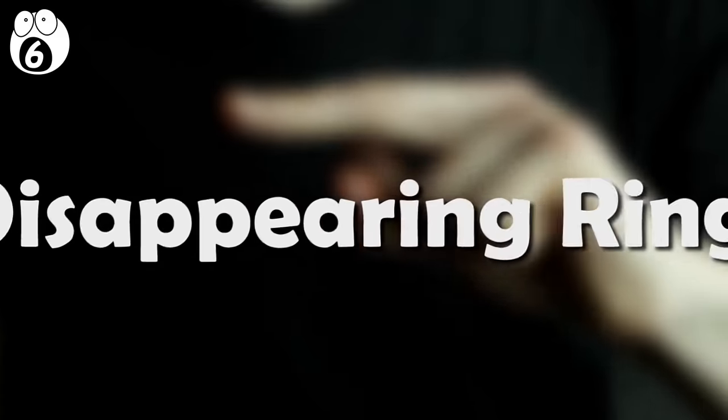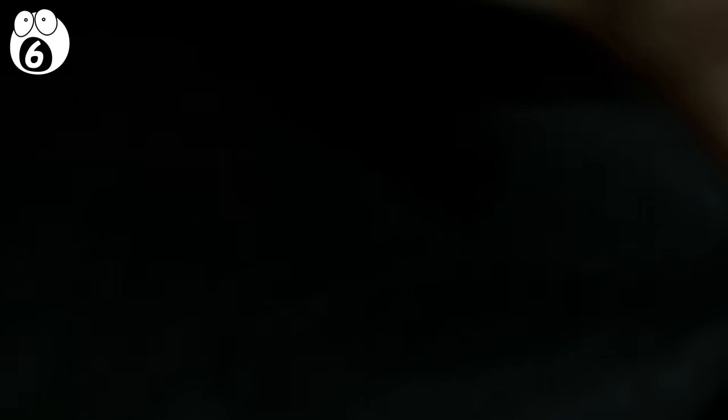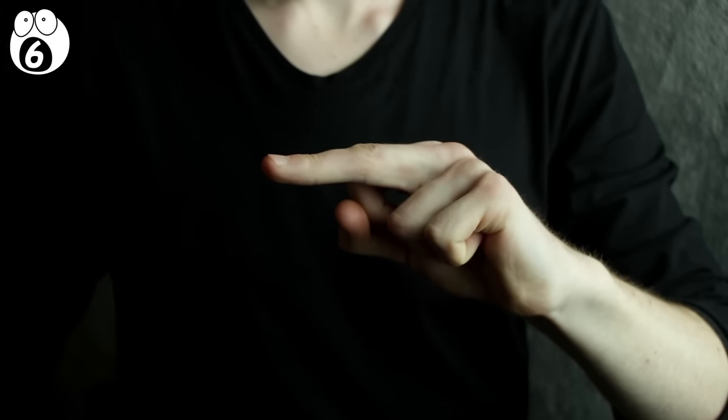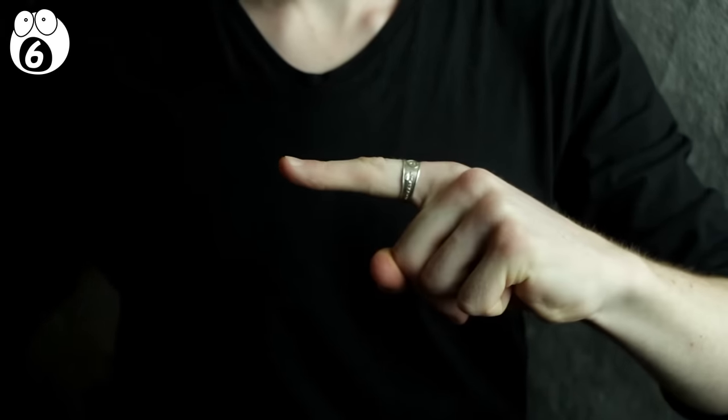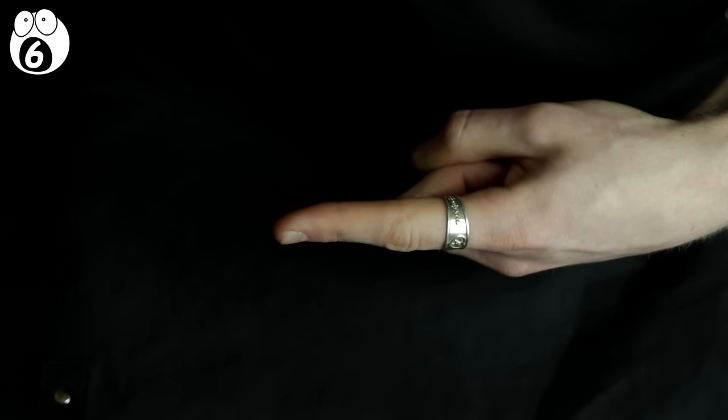Number 6. Disappearing Ring. Ever wanted to make a ring disappear? Here's how. Place the ring on your index finger. Wave your other magic hand in front of it. The ring is gone. A second wave, and it's back again. All you have to do to make this trick magic is simply swap fingers. When you wave your hand, you swap your index finger for your middle finger, and then swap them back again to make the ring reappear. Who knew magic was so easy?